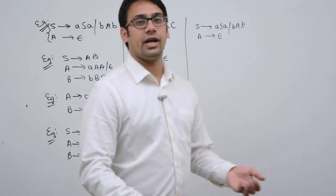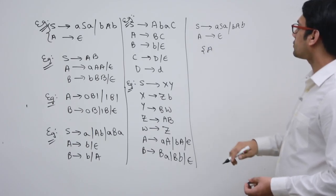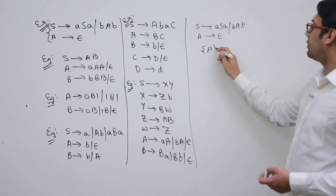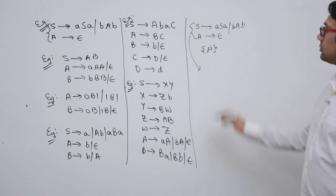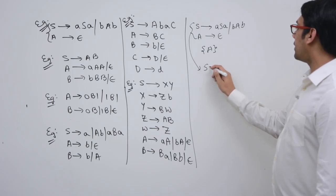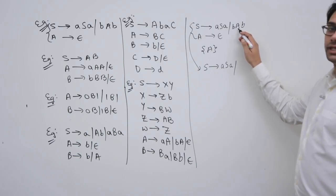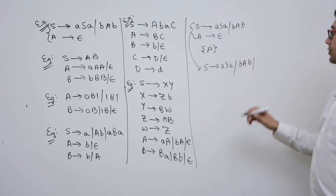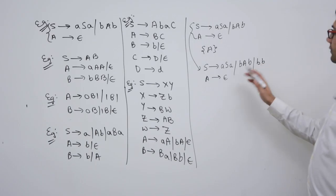The first step is to find all the nullable variables, or find all the epsilon productions. The only nullable variable here is A. After finding the nullable variables, write all productions with A and without A. For example, S can derive a S a — write this with A and without it. Without A, b a b becomes b b.